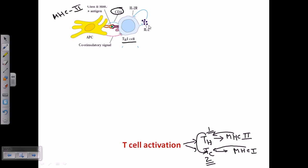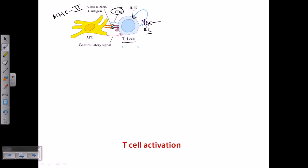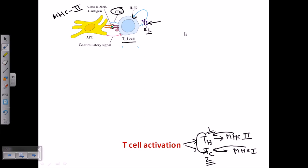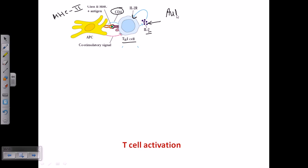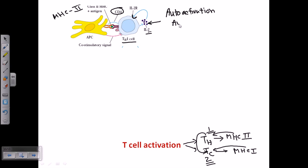After activation, the T-helper cell starts secreting interleukin or chemokine molecules. These interleukin 2 molecules bind with IL-2 receptors found on the surface of the T-helper cell itself. This results in auto-activation of the T-helper 1 cell by IL-2 secreted by its own cell — this type of self-activation is called autocrine activity.